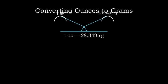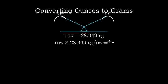So if we want to convert 6 ounces to grams, we multiply 6 times 28.3495. Let's set this up as an equation.